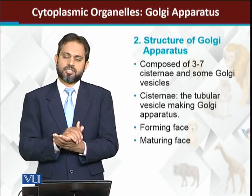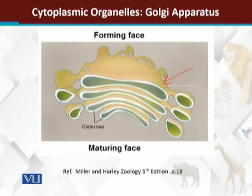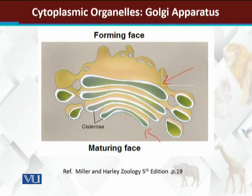The side towards the cell membrane is called the maturing phase — these are the old or mature cisternae. Looking at the structure, the upper side shows the newly forming large cisternae. Vesicles bud off from the maturing side, which is why that side becomes smaller in size. The forming phase is on one side and the maturing phase on the other.